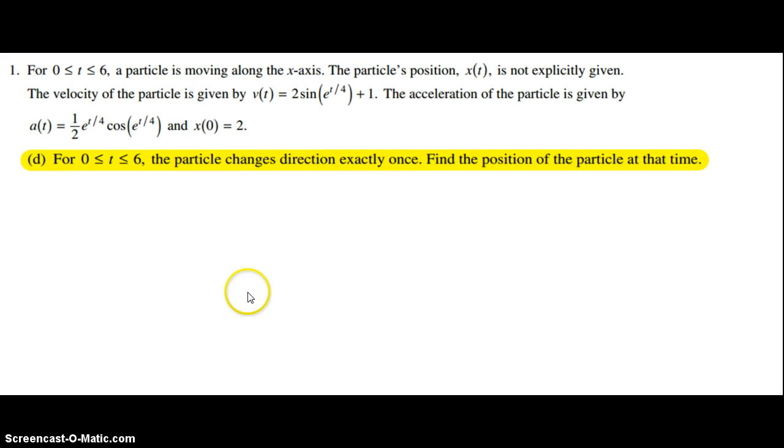Part D: For 0 ≤ t ≤ 6, the particle changes direction exactly once. That means there's one zero for velocity. Find the position of the particle at that time.